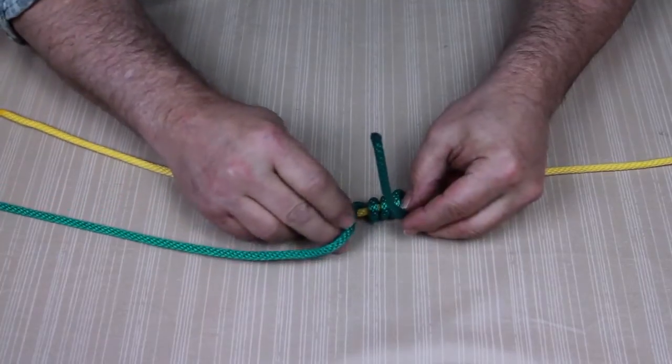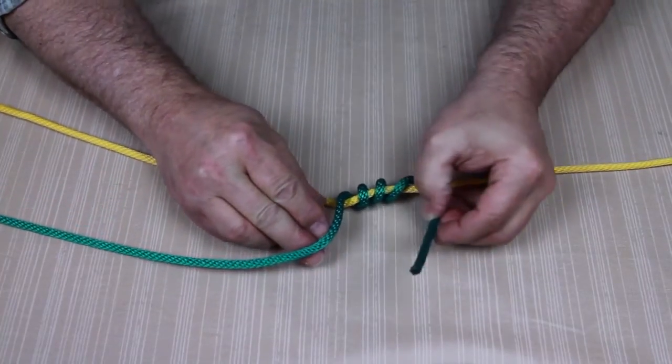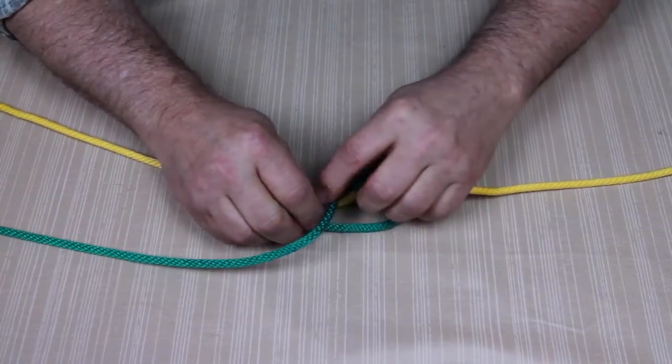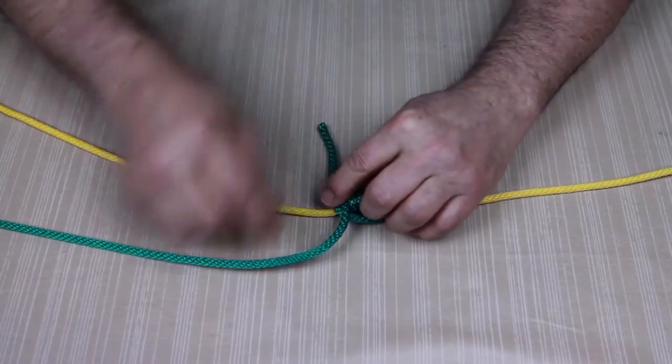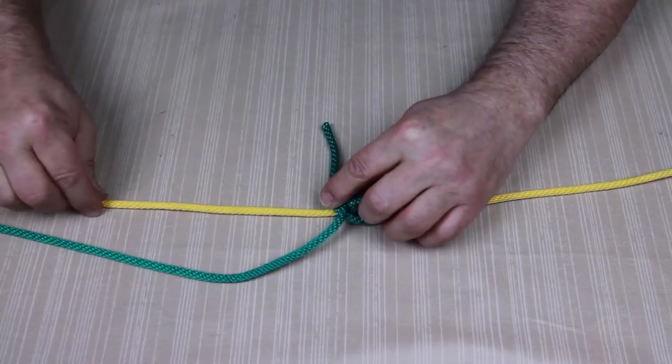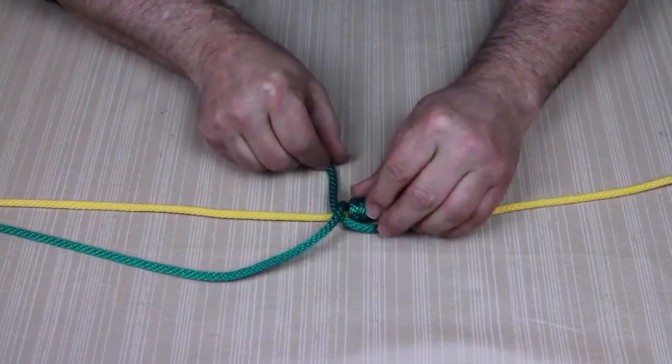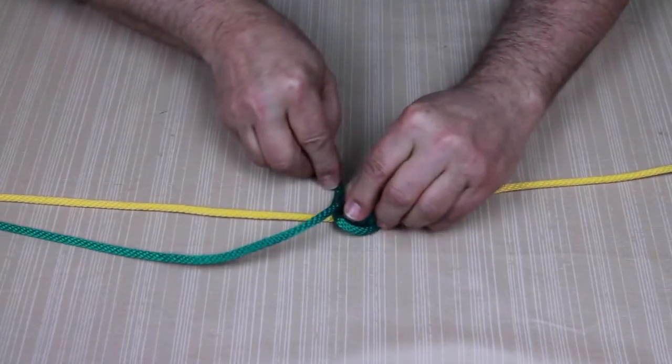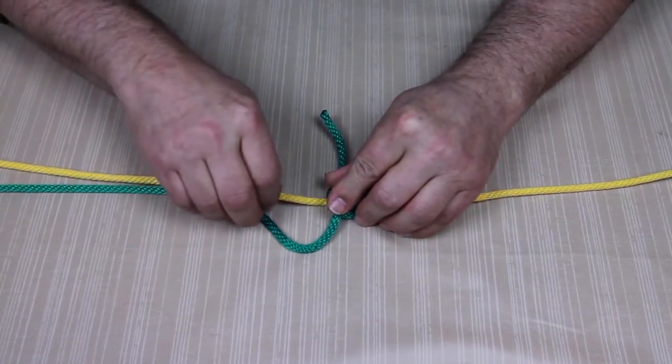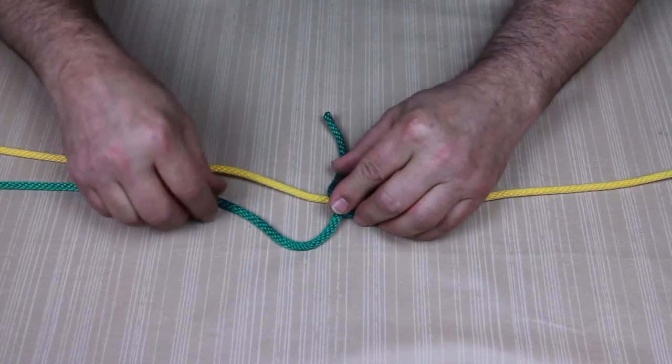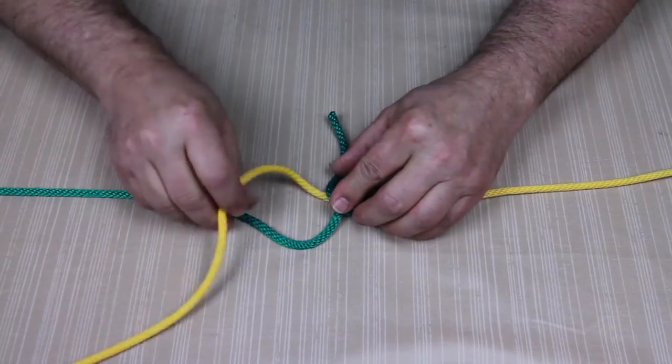Once you have it wrapped around the line you want to take the tag end and slide it between the line you've just tied and the line you're attaching to. What that will do is allow you to form a small loop when you're attaching the second line.